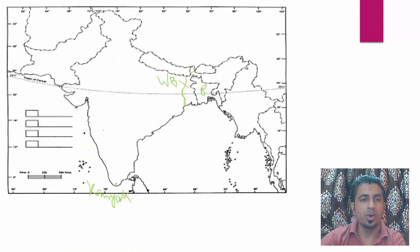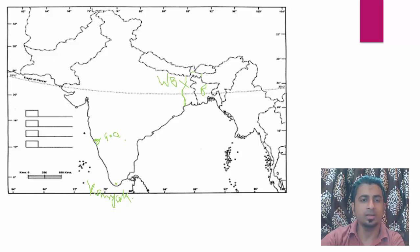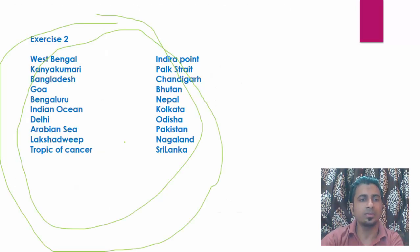Our next item will be Goa. Goa is south of Maharashtra and north of Karnataka. It is somewhere here — it is a small state, I think the smallest state in India. You will mark it as Goa. If you know the location of a place you will be able to mark it very easily. So if you know Goa is in between Maharashtra and Karnataka, it is easy for you.